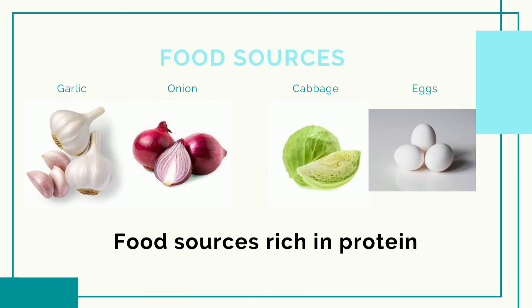For food sources, any food that is rich in protein will automatically provide you with sulfur. I'll leave a link to a video about protein-rich foods in the description box. Apart from that, garlic, onion, cabbage, and eggs are all foods that are very rich in sulfur.